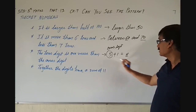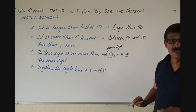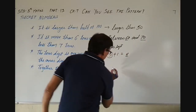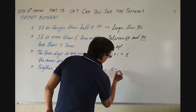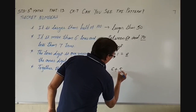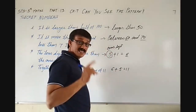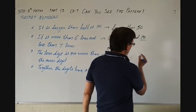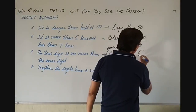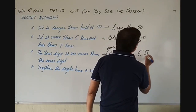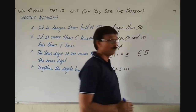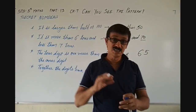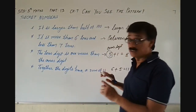6 plus 5 is equal to 11, and therefore the secret number is 65. I hope you must have understood this.